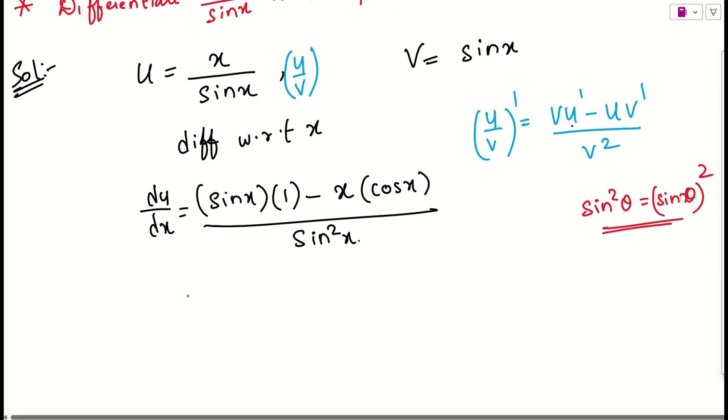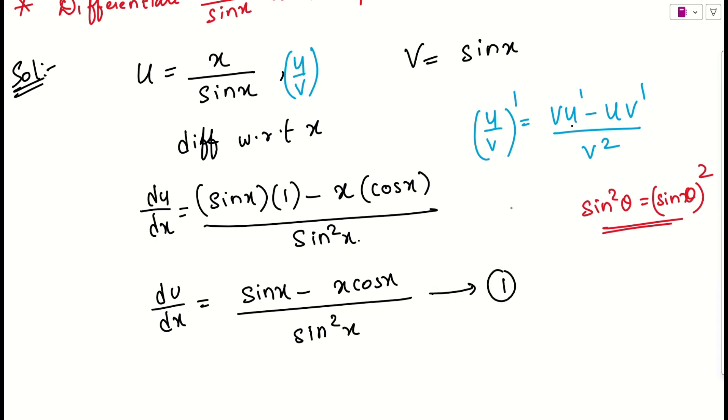So the same thing I will be applying here. So what we will be getting? du by dx will be sin x minus x cos x by denominator will be simply sin square of x. Other than this we can't do anything. You just keep as it is. This is equation number one.